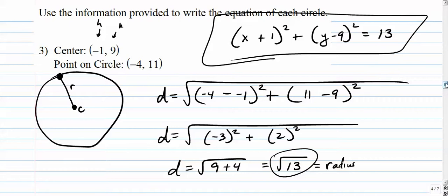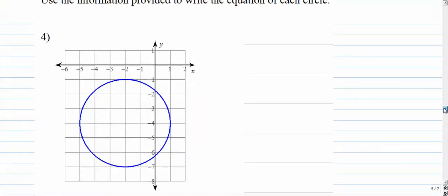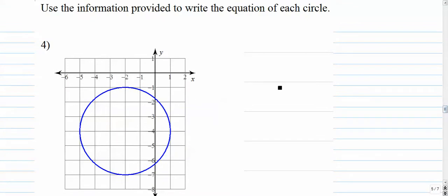Not too bad. Moving along. A couple more examples here. We want to write the equation of this circle. So let's just find the center. The center is at negative 2, negative 4. So it's going to be x plus 2 quantity squared plus quantity y plus 4 squared.